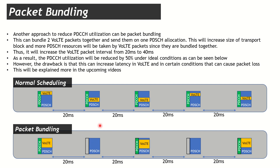Both SPS and packet bundling can reduce control channel congestion. However, this also means PDCCH utilization itself may become the next bottleneck. In the next session, we'll talk about optimization techniques to handle PDCCH congestion for VoLTE and what we can do to minimize it. Thanks a lot, have a nice day — do subscribe and stay tuned.